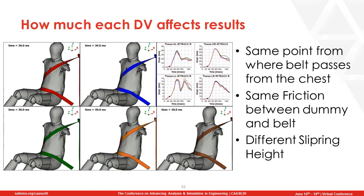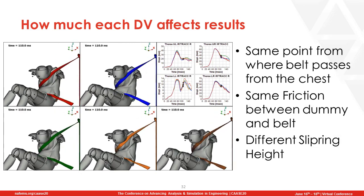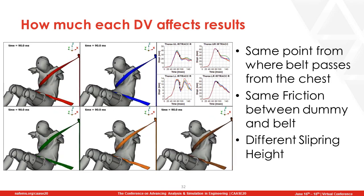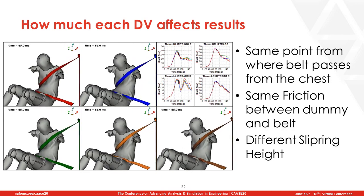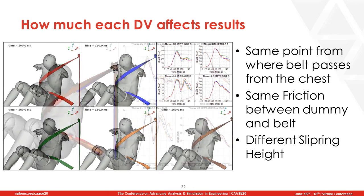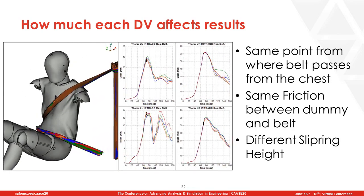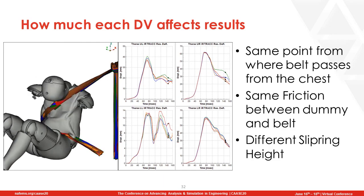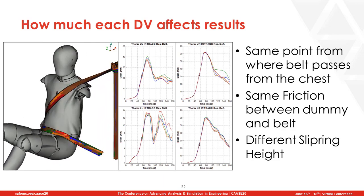Finally, let's see how the different slip ring height affected the results. Here we have 5 experiments with the same belt chest position and same friction but different shoulder slip ring heights. Looking at the history results and the 3D animations together, we see that this design variable did not affect the results as much — it affected the results less than the previous two variables.